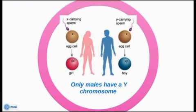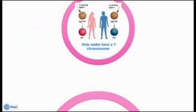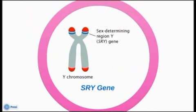Males have one Y chromosome and one X chromosome, while females have two X chromosomes. In mammals, the Y chromosome contains a gene, SRY, which triggers embryonic development as a male, otherwise known as testes development.